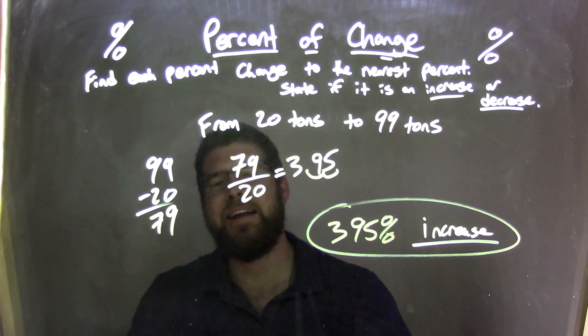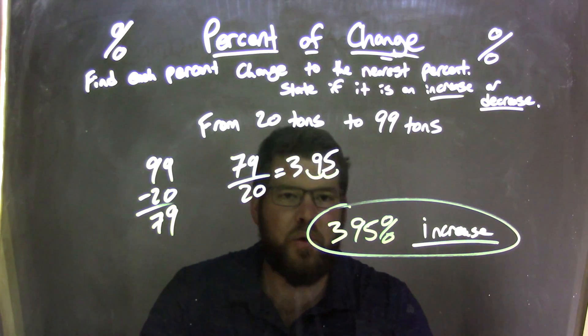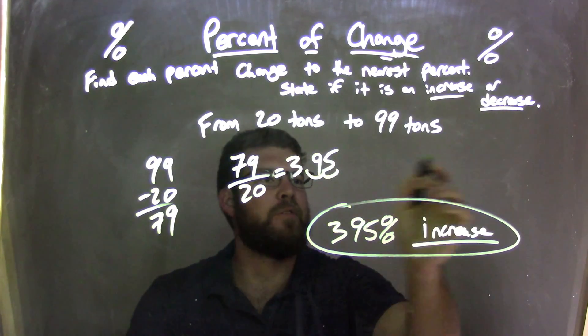So, we've got 395 percent increase. There's no rounding need. It's just zeros from there on out.